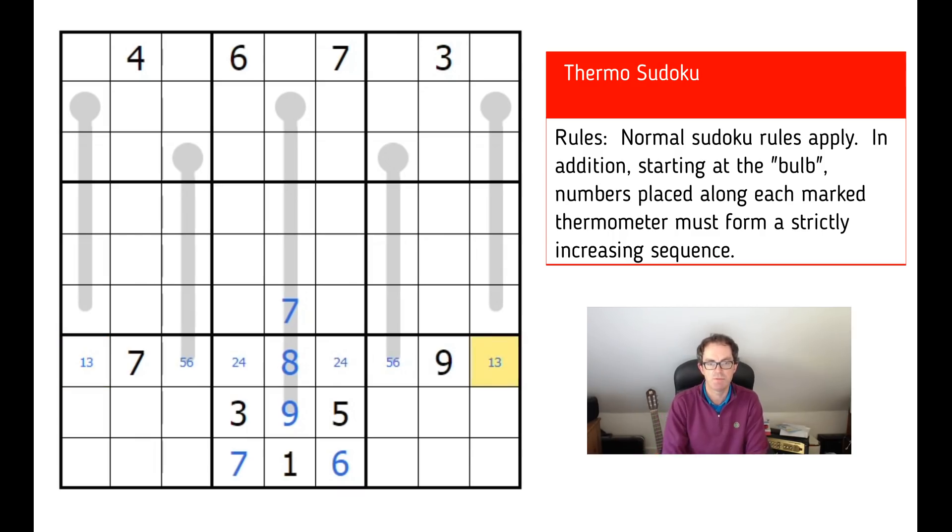Now, you'll notice that I am not using Snyder notation today. So I am not highlighting in three by three blocks where a number can only go in two positions. Sometimes I do that with these puzzles, but actually pairs, highlighting cells that can only contain two digits, I find to be a very useful form of notation for this particular Sudoku variant.